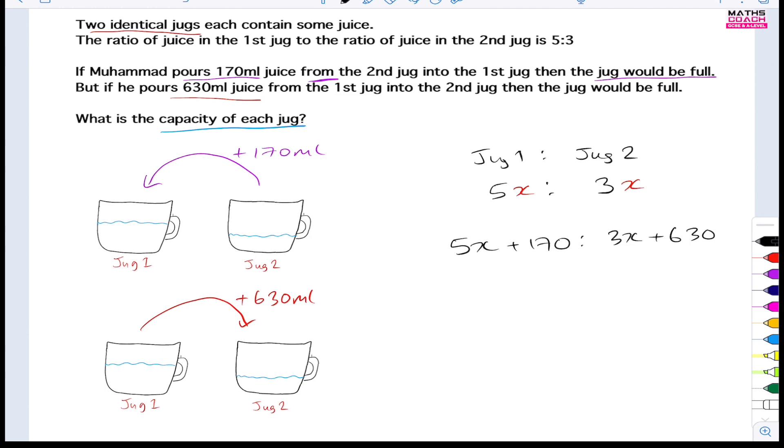So this is the algebra that we've just set up. Now how do we look at this? Well, let's focus on here for now. This is representing when both jugs are at the maximum capacity. Therefore, if the jugs are identical - remember it told you that in the question - if the jugs are identical, that means the maximum capacity of each jug would be identical to each other too. So we can make an equation by doing 5x plus 170 - the first jug at its full - equal to the second jug at its full, which is 3x plus 630.